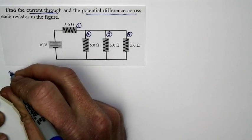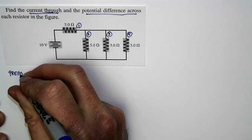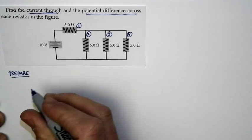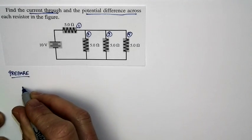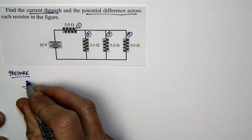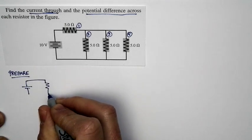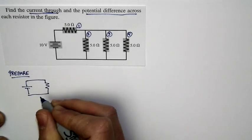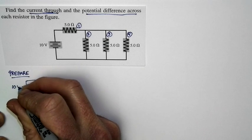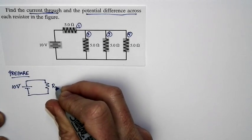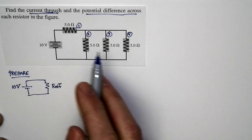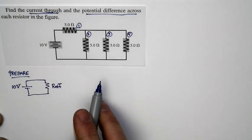We're going to start by analyzing the circuit as a whole. We can take this whole complex circuit and reduce it to a single circuit that consists of a single power supply and a single resistance — a 10 volt power supply and a resistance that's just the effective resistance of the whole circuit.